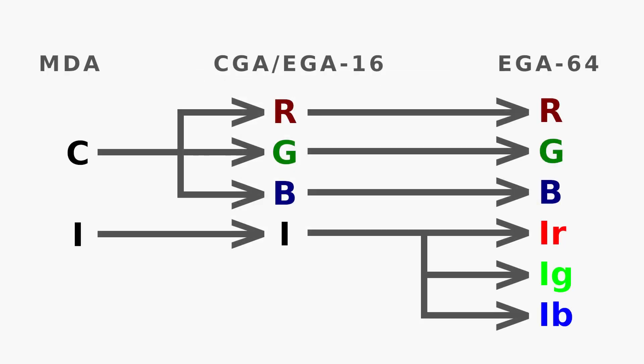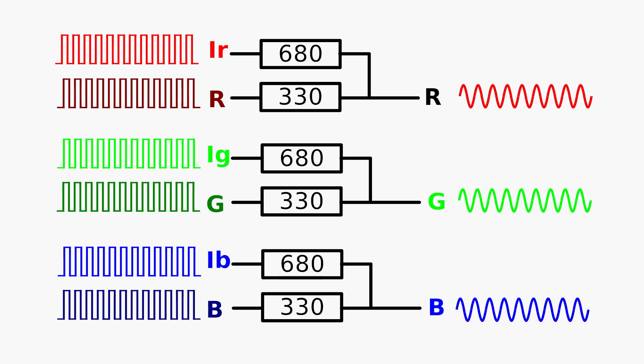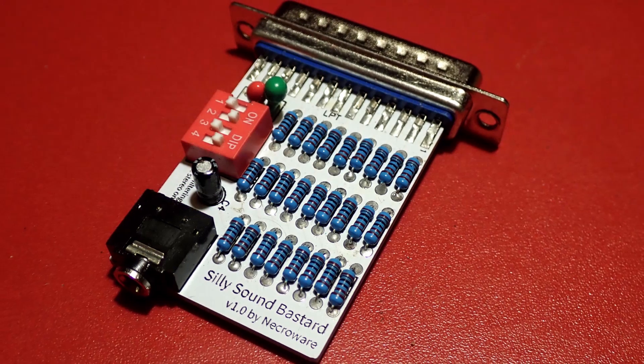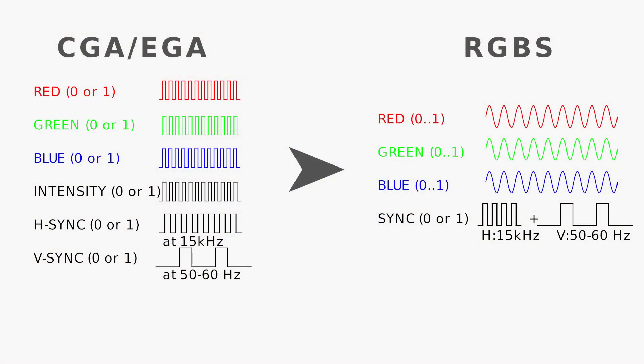This way we can convert any input — MDA, CGA, and 16 colors EGA — to 64 colors EGA. But the signal is still digital. How to convert it to analog RGB, which GBS 8200 would understand? I won't reinvent the wheel and will take what the Rastory suggested: a simple resistor circuit that mixes the RGB color values two-thirds to one-third of the input voltage with intensity. If you're interested in digital-to-analog conversion using resistors, I suggest watching my silly sound bastard video. Okay, that was the theory — now we're coming to the interesting part: how to implement all this.